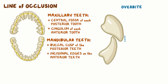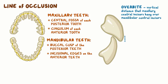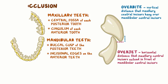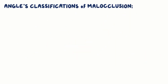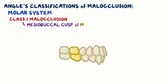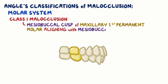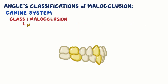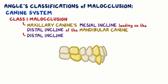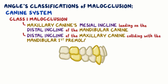This produces a normal small overbite, which refers to the vertical distance that the maxillary central incisors hang over the mandibular central incisors. It also produces a normal small overjet, which refers to the horizontal distance that the maxillary central incisors extend forward in front of the mandibular central incisors. Angle's classifications of malocclusion are broken down into classes. In the molar system, class I malocclusion is characterized by a mesiobuccal cusp of the maxillary first permanent molar aligning with the mesiobuccal groove of the mandibular first molar. In the canine system, class I is characterized by the maxillary canine's mesial incline landing on the distal incline of the mandibular canine, and similarly, the distal incline of the maxillary canine colliding with the mandibular first premolar's mesial incline.